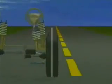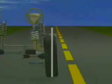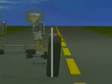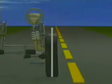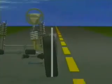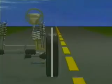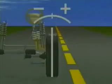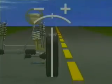Camber is defined as the inward or outward tilt of the wheel at the top when viewed from the front of the vehicle. Camber is measured in degrees. A wheel with zero degrees camber is vertical.